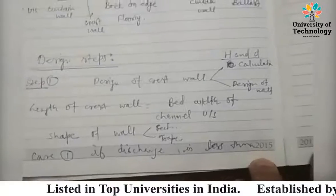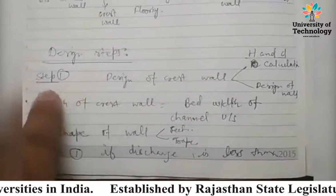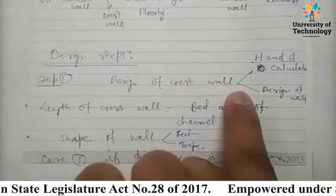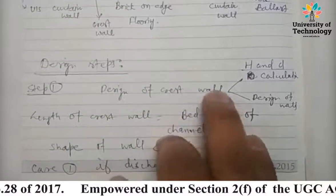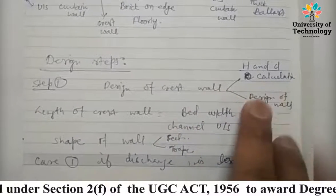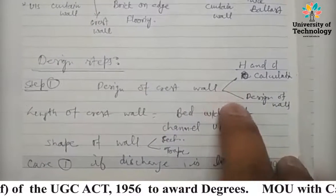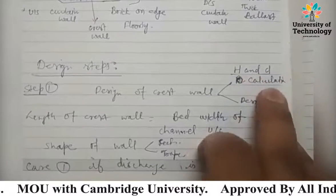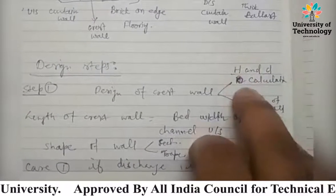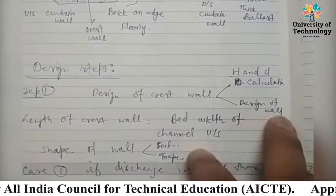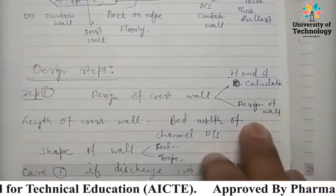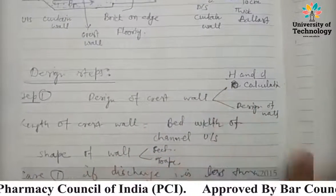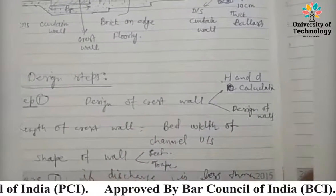Step one is the design of the crest wall. In this step, we will calculate the value of capital H and small d. The second portion involves design of the wall. These are the design steps we will further implement by performing a question.